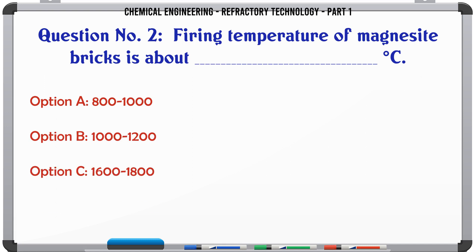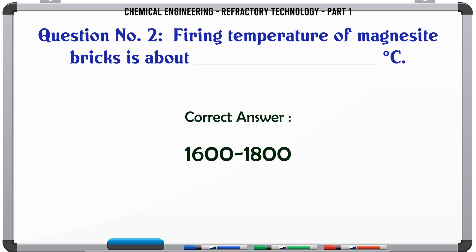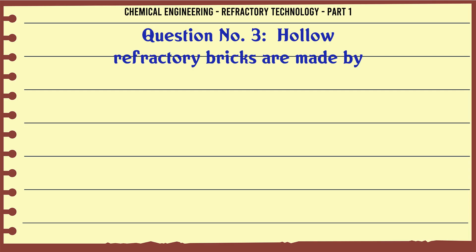Firing temperature of magnesite bricks is about ___ degree C. A. 800–1000, B. 1000–1200, C. 1600–1800, D. 2400–2600. The correct answer is 1600–1800.